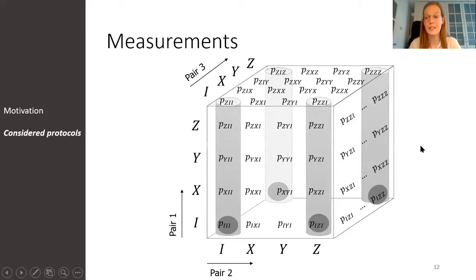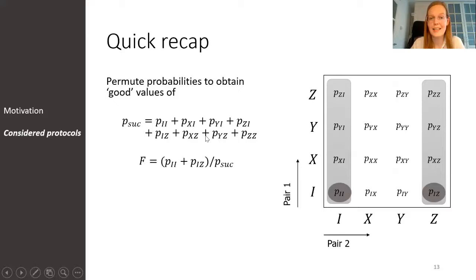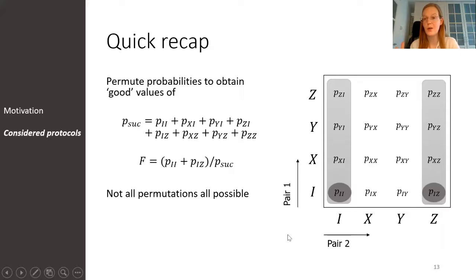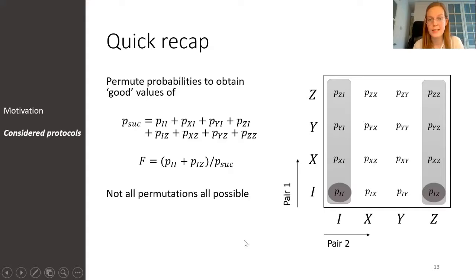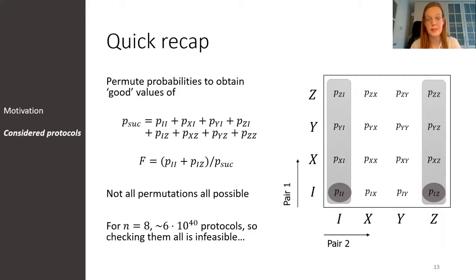Before moving on to the next topic, let me quickly recap what we have done so far. We consider bilocal Clifford operations, and we have seen that they result in a permutation of the probabilities. To find good protocols, we want to find the operations or permutations that give good values of the success probability and the fidelity. Not all permutations are possible, so we cannot just pick the best coefficients and put them in the right place. Instead, we could check all bilocal Clifford operations, but the number of Clifford operations grows really fast — for n=8, there are about 6×10^40 protocols, so checking them all becomes simply infeasible.